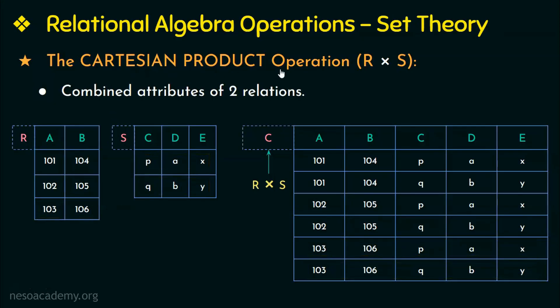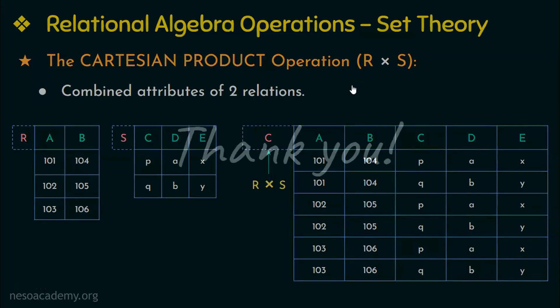The Cartesian product operation is generally used when we want to join two tables or two relations. Also note that the two relations need not be union compatible when the Cartesian product operation is applied. With this we come to the end of this video. We have learned about the set theory operations in relational algebra: the union operation, the intersection operation, the set difference or minus operation, and the Cartesian product operation. Hope you have understood them. Thank you.